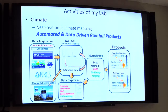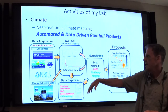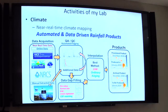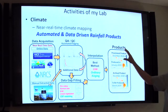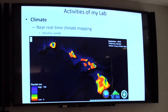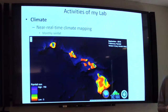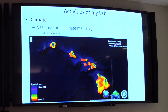This automated process grabs data online from a variety of sources, does quality control automatically, fills in missing data through gap-filling, does automatic interpolation, produces a map, and updates a website — running on a server and happening automatically. We have it working well for monthly rainfall. The September map is shown here, and as of November 1st the October map was produced automatically.